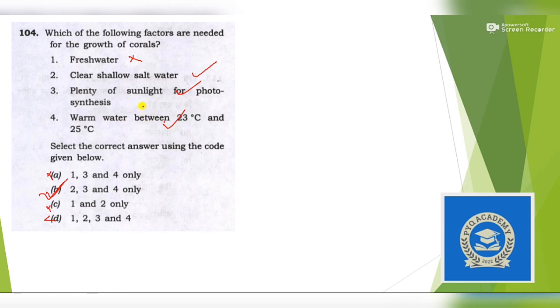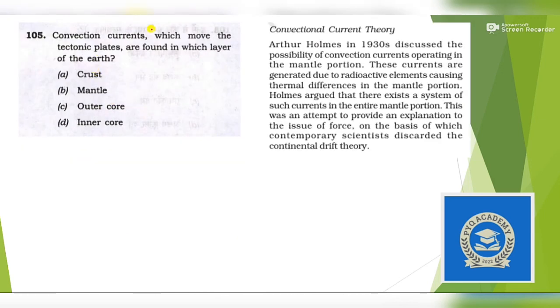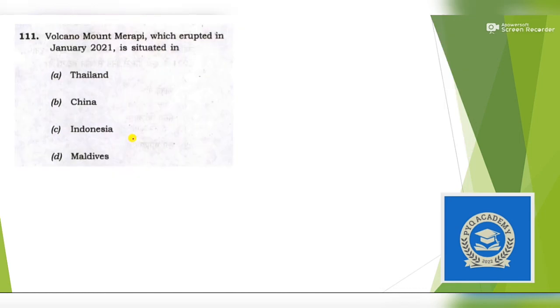Next question: Convection currents which move tectonic plates are found in which layer? They are found in the mantle. The crust is the lithospheric part, but after crust there is the mantle which is semi-solid or in liquid state, where you can find convection currents.